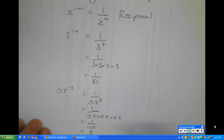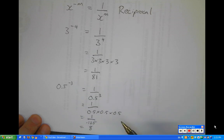So you don't always get a small number when you do this. It really depends what the base number is. But you will always get a reciprocal of that base number to a positive power.